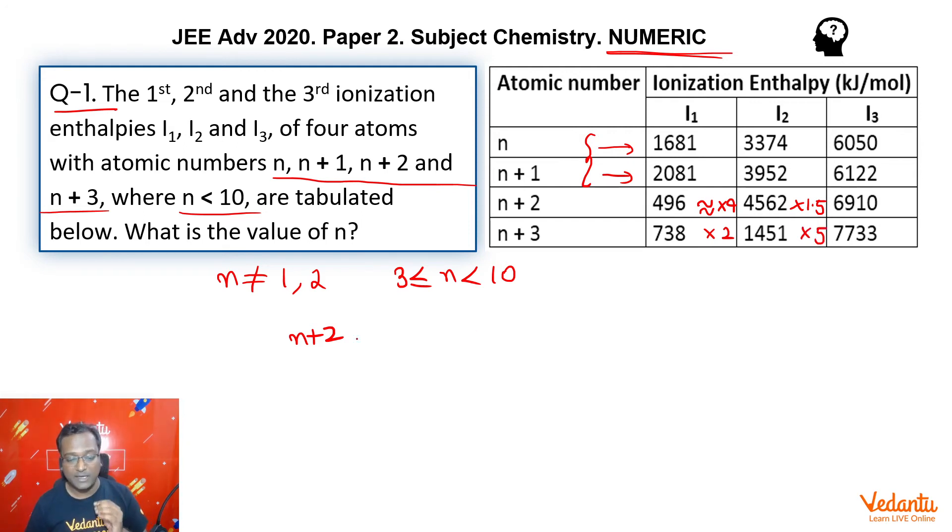So that means guys, for n plus 2 system, we see that there is a huge jump from IE1 to IE2. And for n plus 3 system, we see that there is a huge jump from IE2 to IE3. What does this tell us? That first, only one electron removal is easy or is possible in the atom with n plus 2 atomic number. And only 2 electron removal is easy or possible with n plus 3 atomic number.